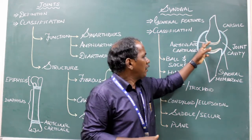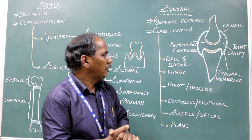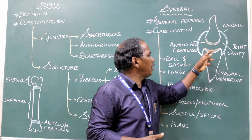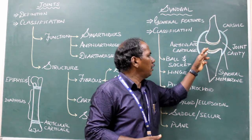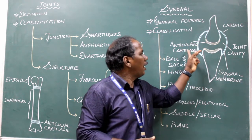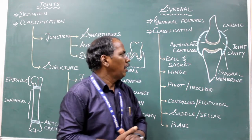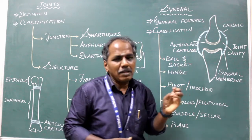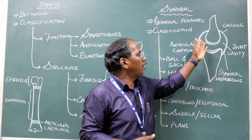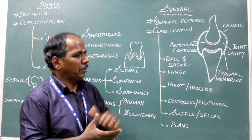Third point: presence of joint cavity. Fourth point: the articular surface is lined by articular cartilage; the non-articular surface is not. Last point: within the synovial membrane there is a fluid known as synovial fluid, which acts as a lubricant and is filled in the joint cavity. These are the general features of synovial joints.